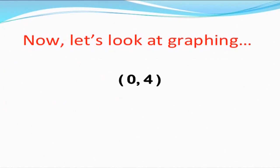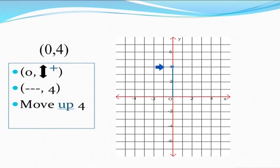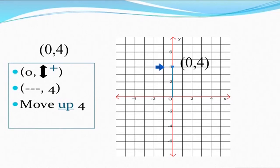Now let us look at graphing (0, 4). As the x-coordinate is 0, we do not need to move to any particular place on the horizontal axis — there is no move either right or left. Then, as the y-coordinate 4 is positive, we move up by 4 points on the y-axis, and the point is (0, 4). We can see it is lying specifically on the y-axis. So we should understand that when the x-coordinate of any point is 0, the point will lie on the y-axis.